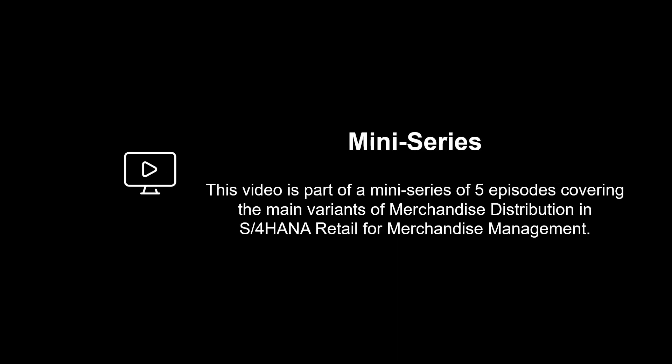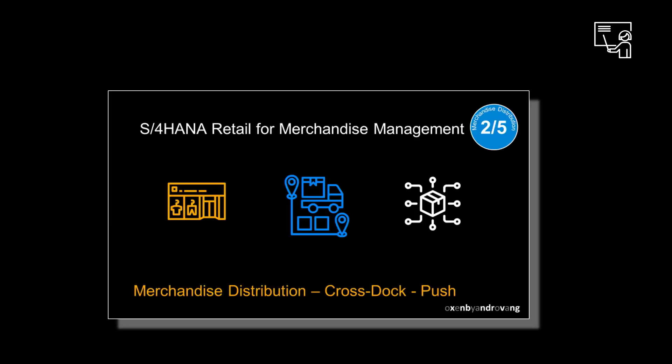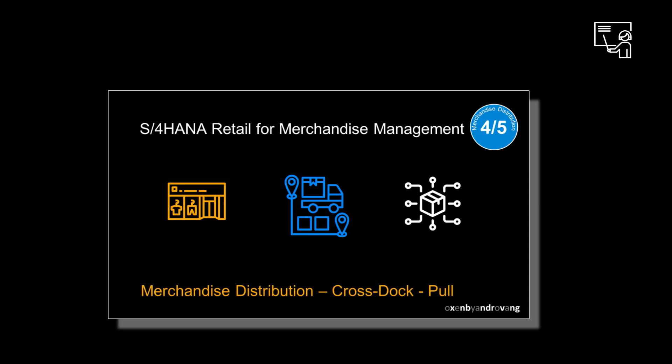This video is part of a mini-series of five episodes covering the main variants of merchandise distribution in S/4HANA Retail for Merchandise Management. In episode 2, we cover in detail the push or product/article-driven flow-through process. In episode 4, we make a switch to pull or recipient-driven processes by looking at pull-based cross-docking. We complete the series in episode 5 by showing the pull or recipient-driven flow-through process.